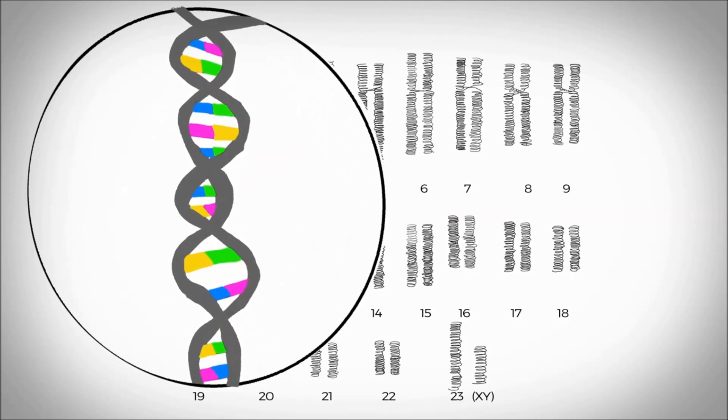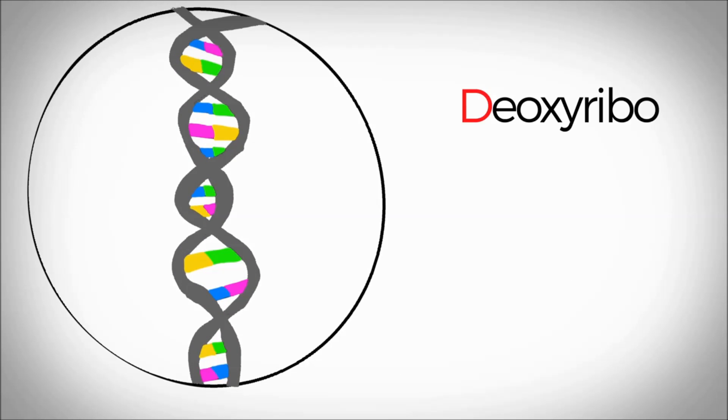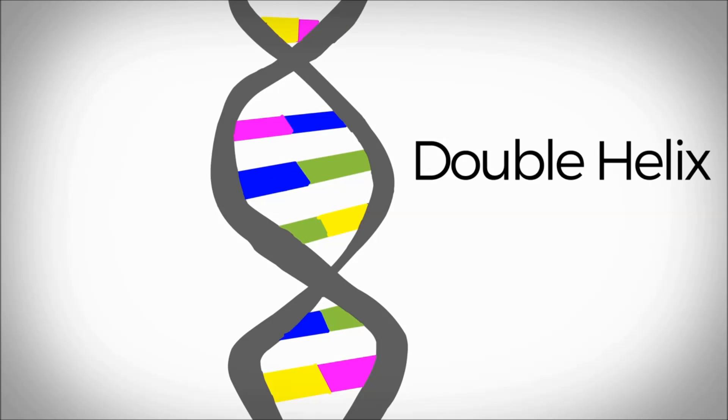The chromosomes are really long strings of DNA, deoxyribonucleic acid. DNA is shaped like a ladder that's been twisted. This shape is called a double helix.